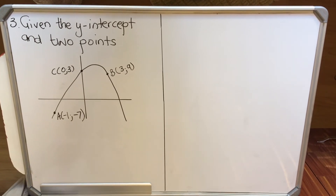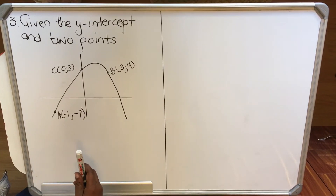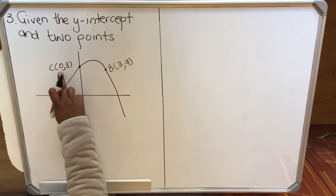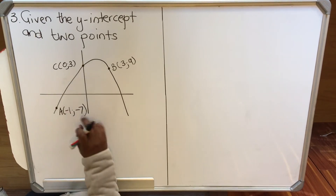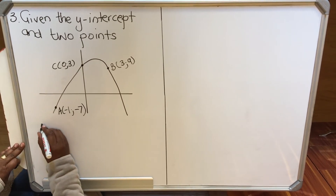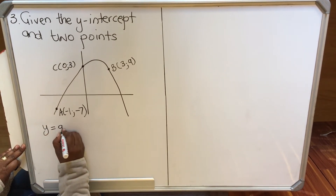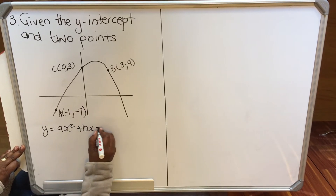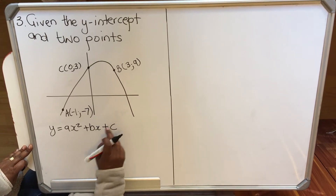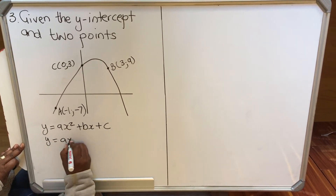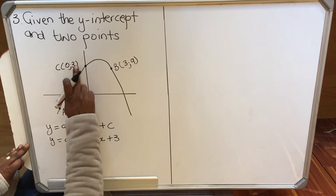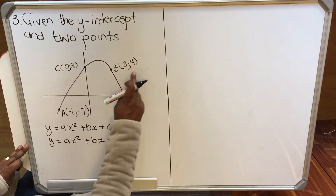The third one is when you are given the y-intercept and two other points. The y-intercept — you'll see (0, 3) or whatever number, so it's the y-intercept. When you are given this, you write the standard form first: y = ax² + bx + c. You substitute c from the y-intercept, so c = 3, giving y = ax² + bx + 3.